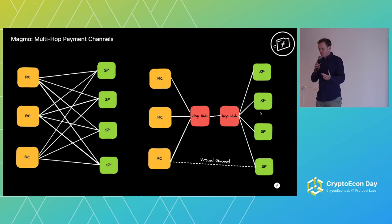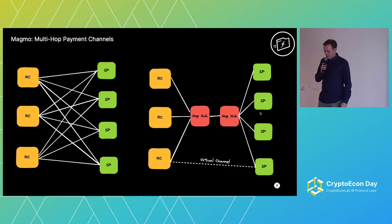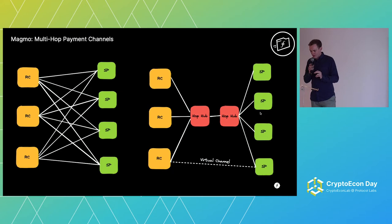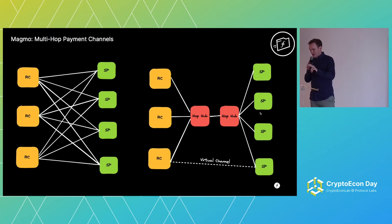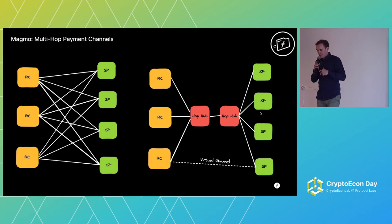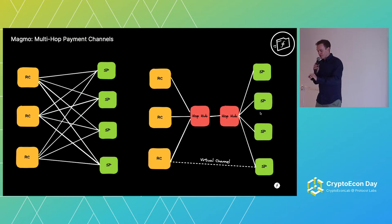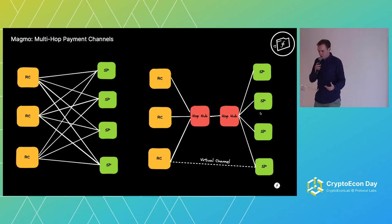If you want to retrieve something from a storage provider you haven't retrieved from before, you have to set up an on-chain transaction, which adds a lot of latency to your retrieval. Magmo are working on a setup whereby every client can connect to what I've called a hop hub. They connect with a payment channel to a hop hub, all hop hubs have a completely connected web of payment channels between them, and there's a payment channel between each storage provider and a hop hub. You can then create virtual channels between retrieval clients and storage providers, and once you exchange vouchers on the virtual channel, you reconcile what's been exchanged across the three hops — meaning you don't have to create a new payment channel every time someone retrieves from a new storage provider.